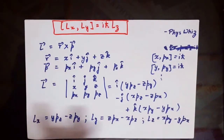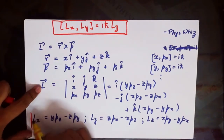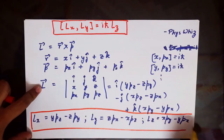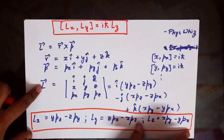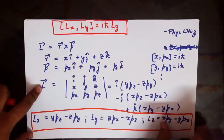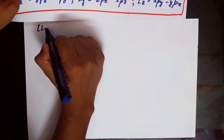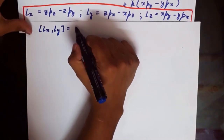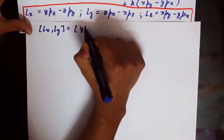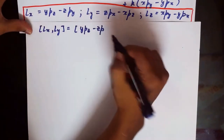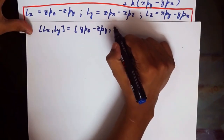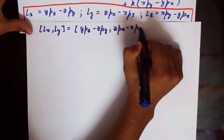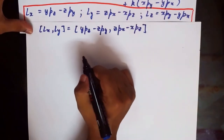We will need these components in order to evaluate the commutator. Plugging in the expressions for Lx and Ly, we get [Lx, Ly] = [yPz − zPy, zPx − xPz].